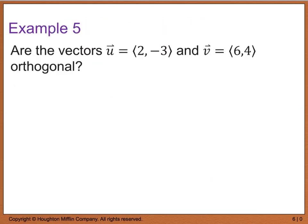So example 5 wants to know, are the vectors u, which equals (2, -3), and vector v, (6, 4), are these two vectors orthogonal or perpendicular to one another?